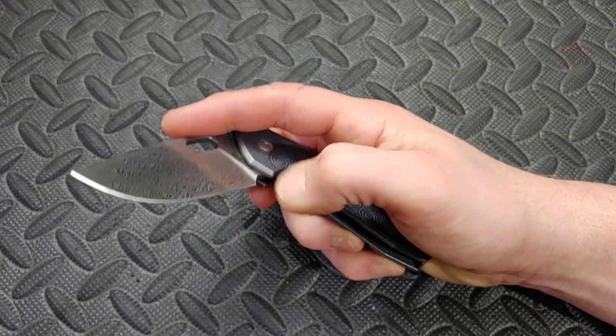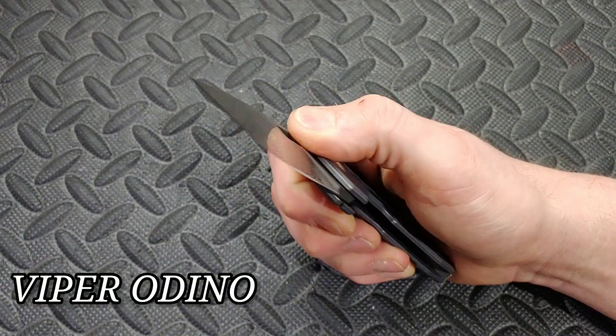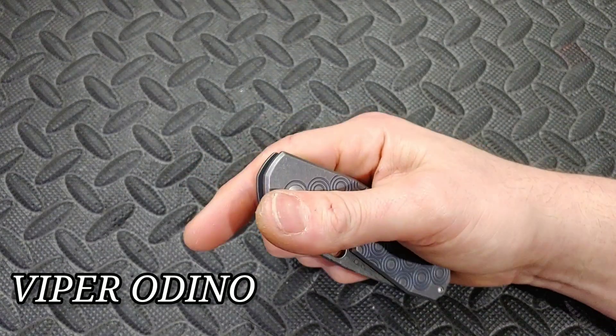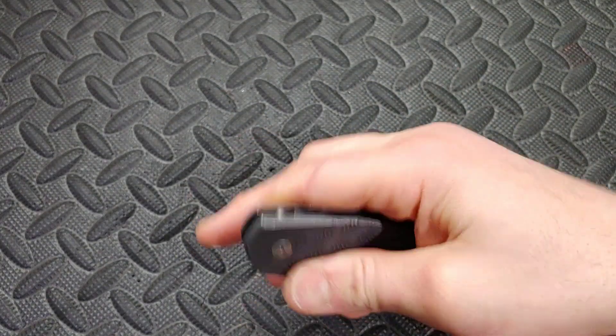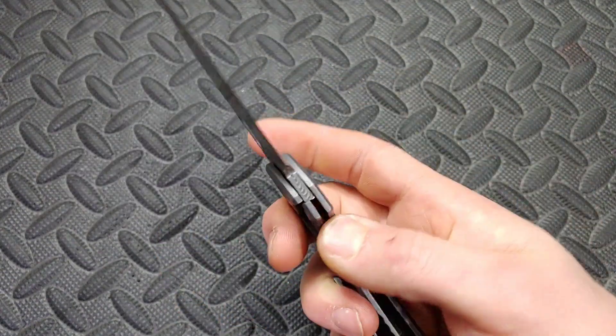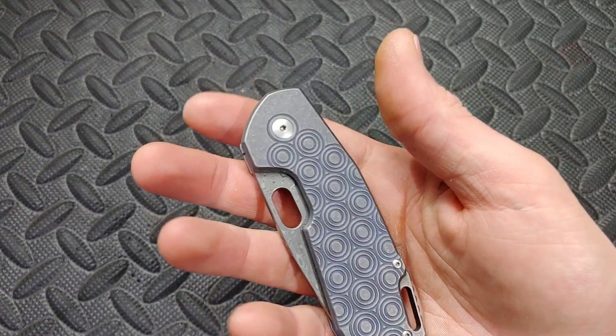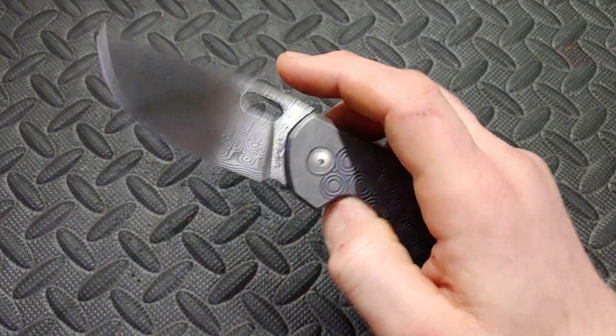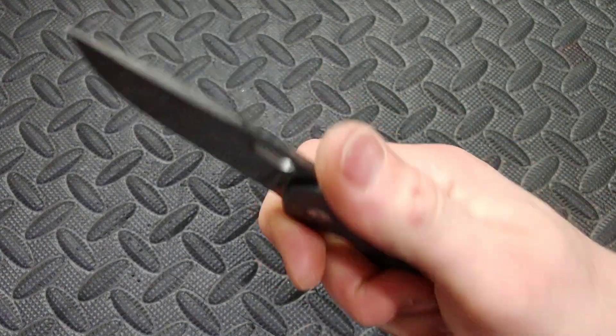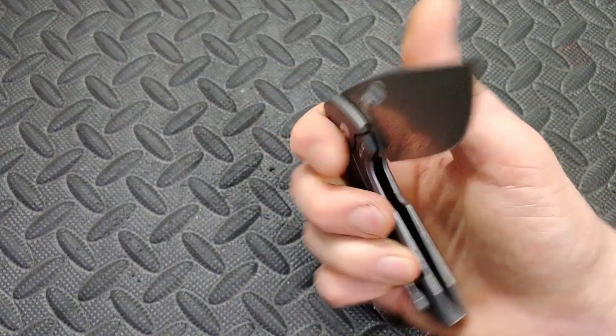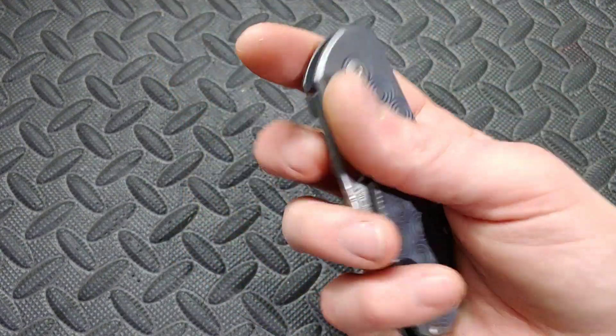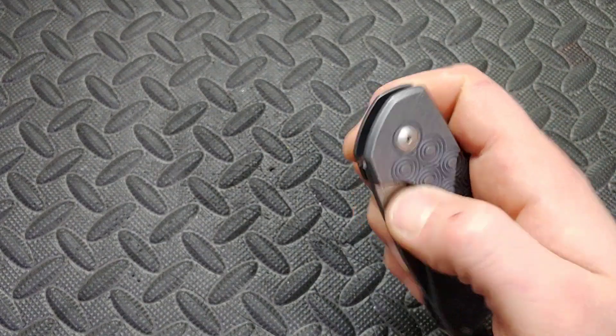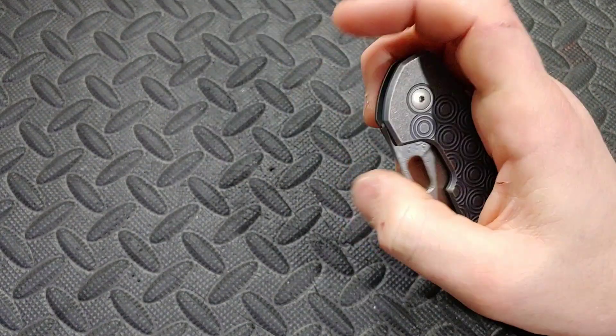Next up we have the Viper Odina. The Viper Odina is a Vox design and you wouldn't really expect it to have a strong detent because it has a thumb hole which usually for thumb holes they need them to be a little bit on the lighter side. In this case it is a very strong detent.